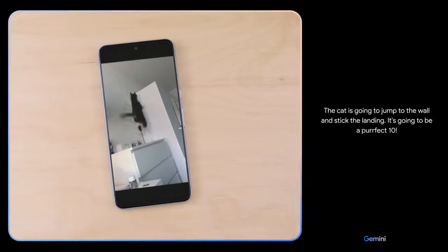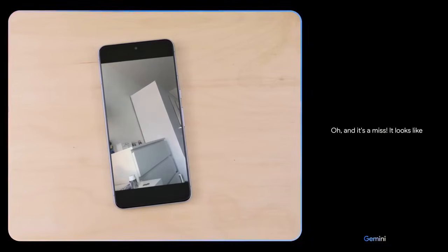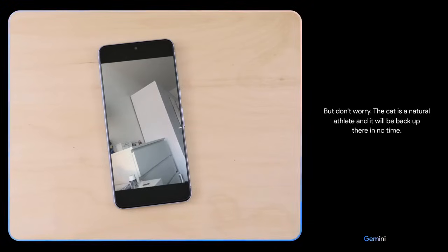What do you think might happen next? The cat is going to jump to the wall and stick the landing. It's going to be a perfect 10. Oh, and it's a miss. It looks like it was just a little too far away. But don't worry, the cat is a natural athlete and it will be back up there in no time.